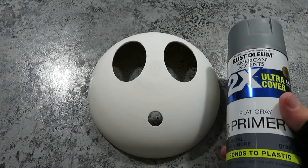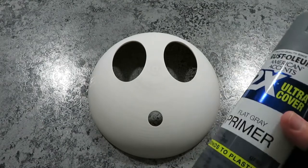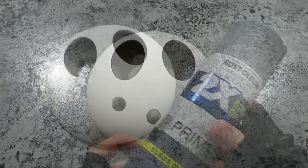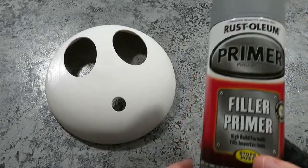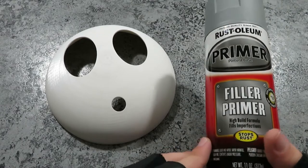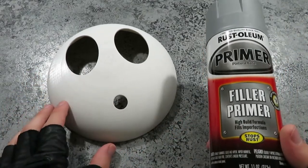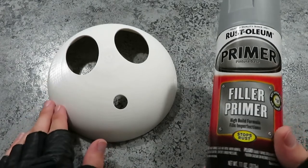Go ahead and get yourself some spray primer. I typically use this Rust-Oleum flat gray, since it's really good at revealing any mistakes you may have missed. Alternatively, you can find something called a filler primer. It's pretty much the same thing, except it has a high buildup formula, which is good for filling out small holes and gaps in the print. Either will work just fine.